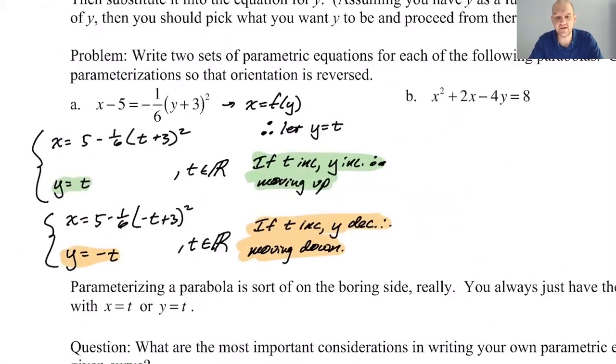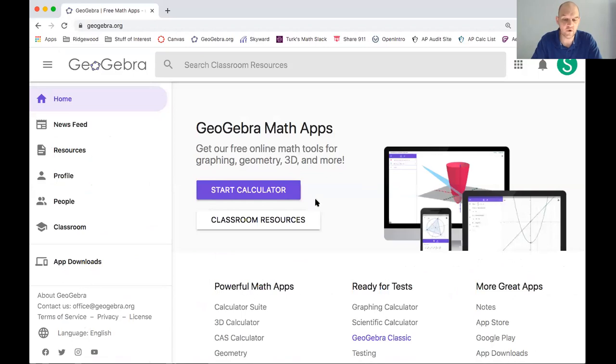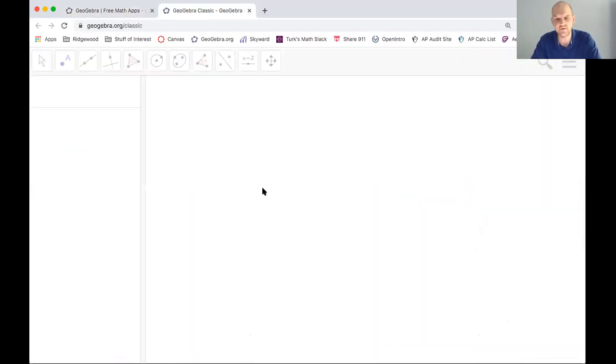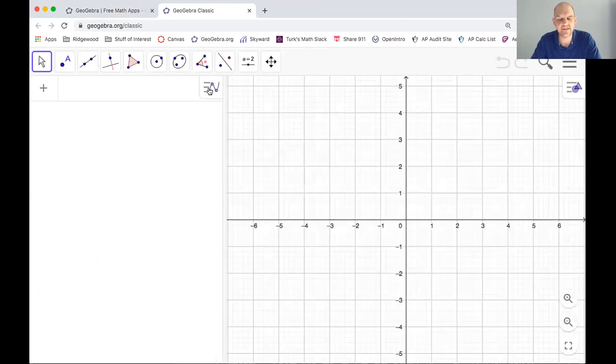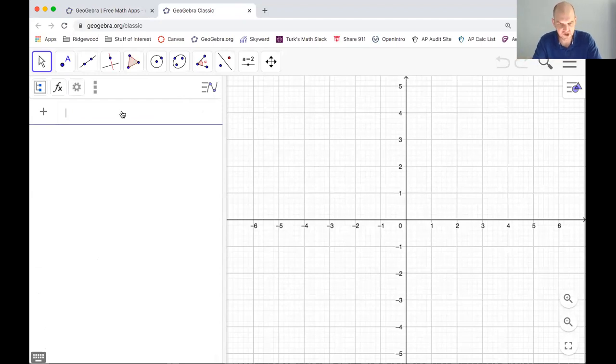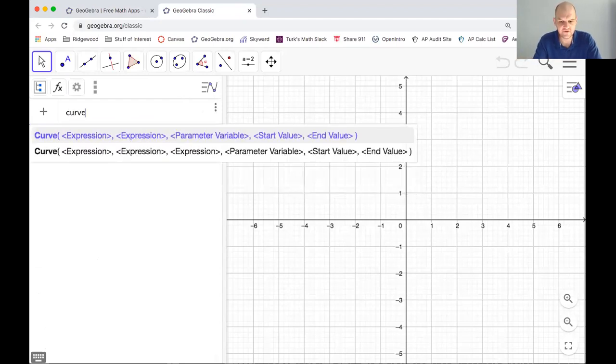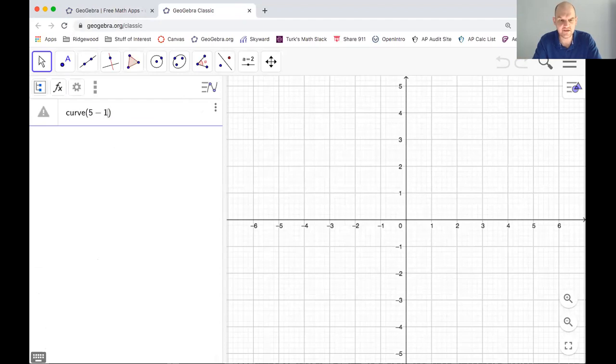So I'm going to switch over to GeoGebra and just graph this right now just to show you what I mean. I always like to click here so that I have access to the full entry bar. Curve is what we use. 5 minus 1/6 quantity t plus 3 squared comma t, comma t is going to be the parameter. Let's go like negative 5 to 5.